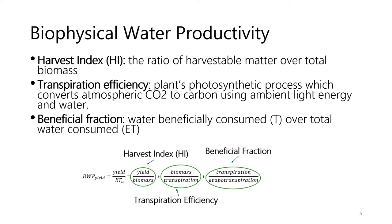Beneficial fraction is the ratio of water that is transpired for crop production over the total water that is evapotranspired — in other words, the ratio between water that is beneficially consumed over the total water that is evapotranspired or consumed.